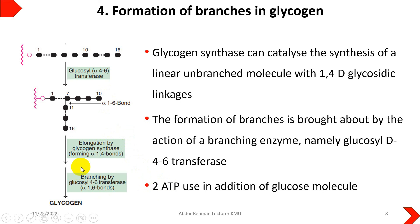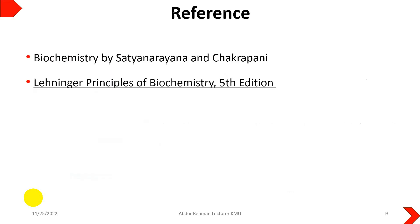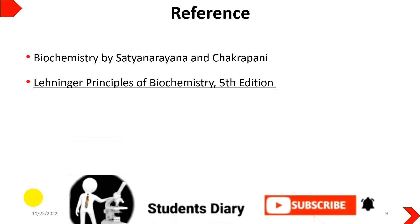In the addition of each glucose molecule, two ATP molecules are utilized. This completes the four-step process of glycogenesis, yielding glycogen as the end product, which is stored in the liver and muscles and provided to the body on demand. See you in the next lecture — Allah Hafiz.